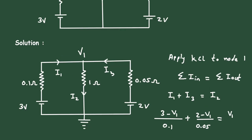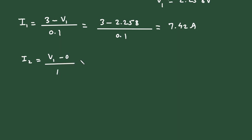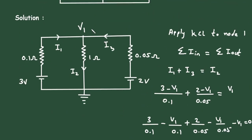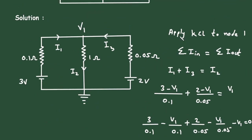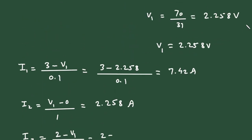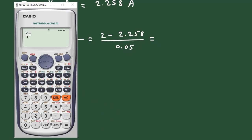Current I2 equals V1 divided by 1, so I2 equals 2.258 amperes. Then I3 equals (2 minus V1) divided by 0.05, which is (2 minus 2.258) divided by 0.05, giving minus 5.16 amperes.